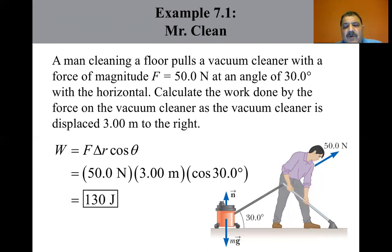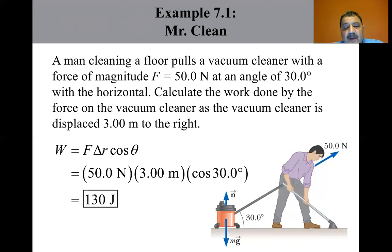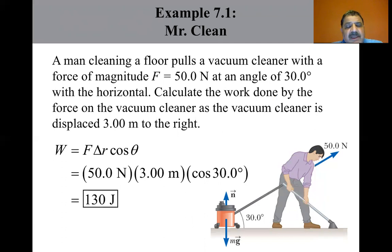Notice that the normal force and the gravitational force mg do no work on the vacuum cleaner because these forces are perpendicular to the displacement. Furthermore, whether or not there is friction between the vacuum cleaner and the floor is not important when calculating work done by the applied force. Additionally, this work does not depend on whether the vacuum moved at constant velocity or if it accelerated. This ends our discussion of work done by a constant force. Next, we will discuss section 7.3, the scalar product of two vectors.